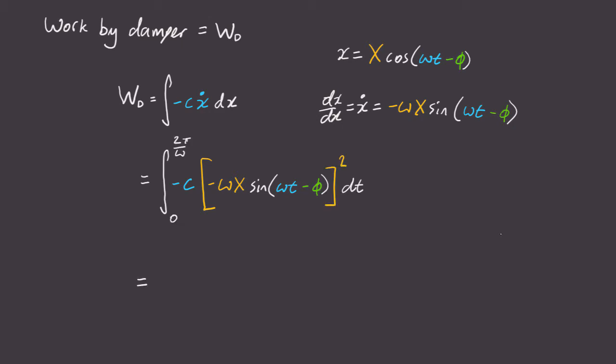Once you evaluate this, you'll get minus c x squared omega pi. And this is the energy added to our system per cycle due to the damping force.